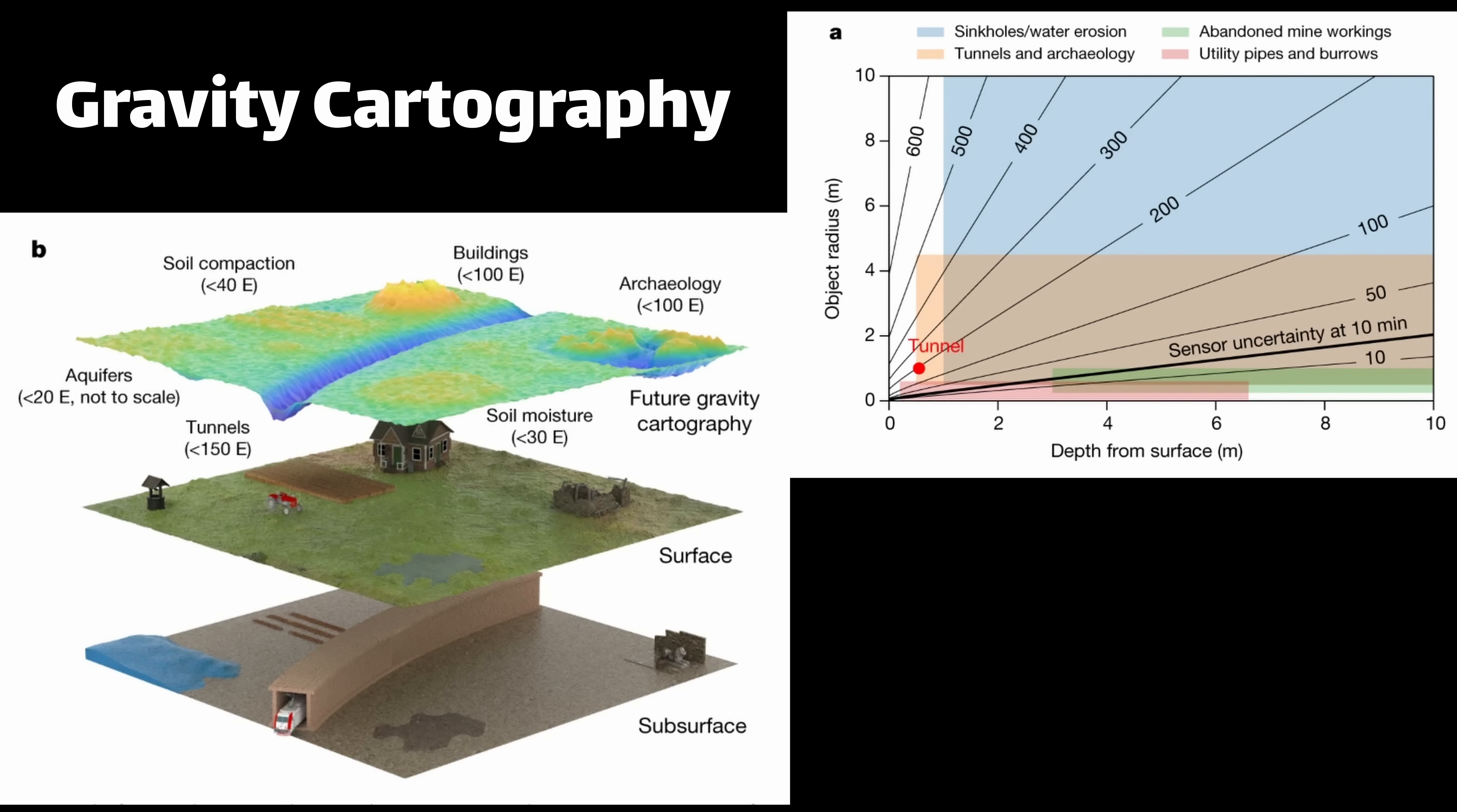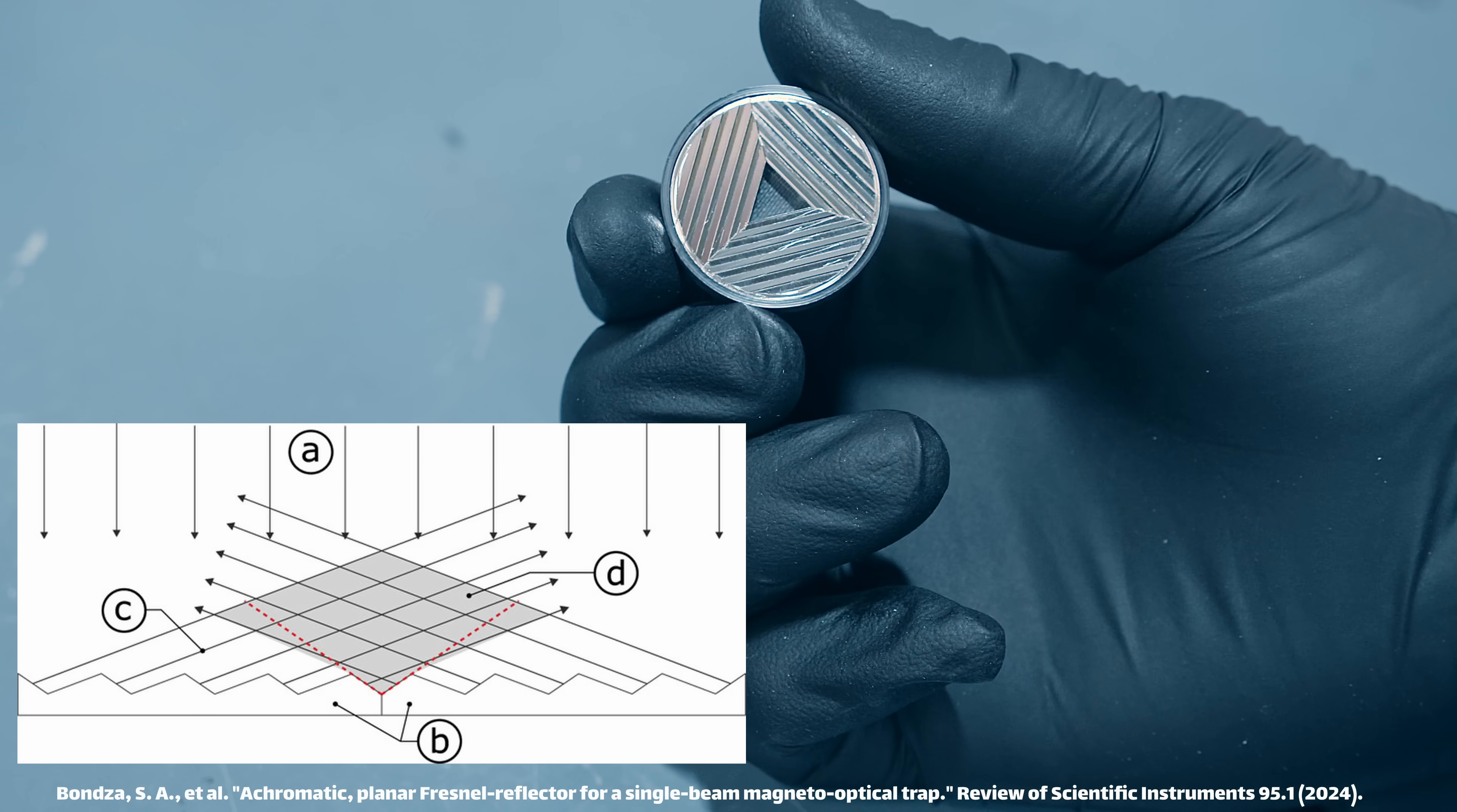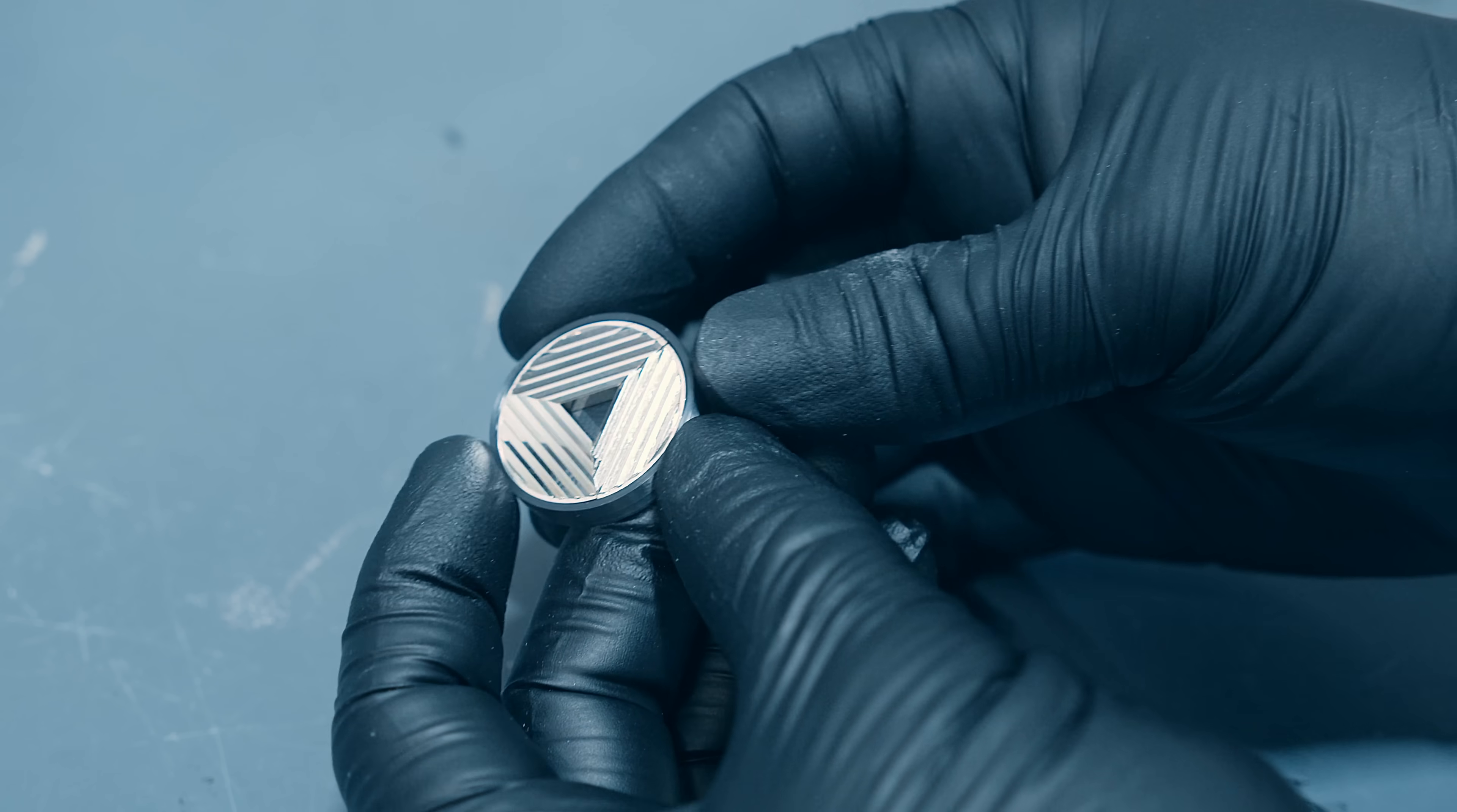There are a few ways to configure a MOT, but the traditional approach is three pairs of lasers focused onto a central region. Unfortunately, this is a really bulky configuration and tedious to align all of those lasers. Instead, the geometry of this mirror reflects a single laser beam back onto itself. This makes alignment much easier, and the device is very compact, which makes it easier to integrate into an experiment.